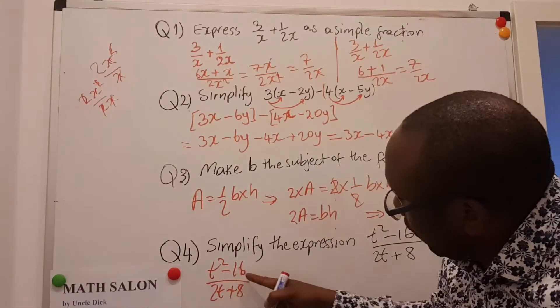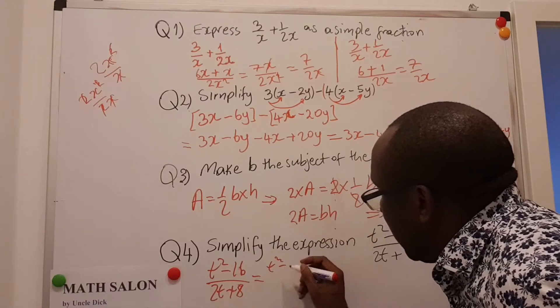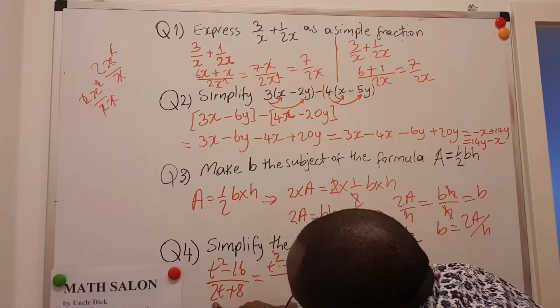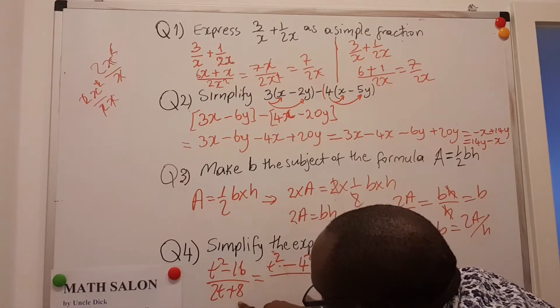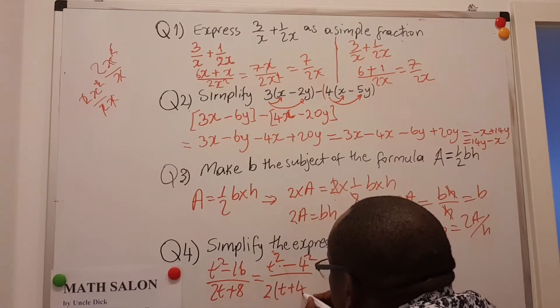If you look at this very well, T squared minus 16 is like T squared minus 4 squared, all over—2 is common here and 2 is common also here in 8. So I can put the 2 outside and I write this as T plus 4.